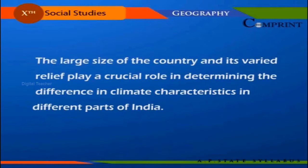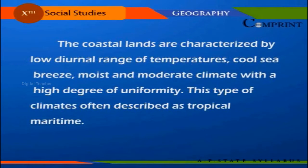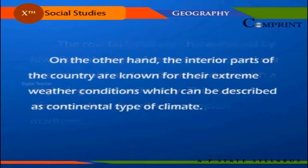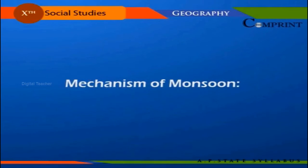The coastal lands are characterized by low diurnal range of temperatures, cool sea breeze, and a moist and moderate climate with a high degree of uniformity. This type of climate is often described as tropical maritime. On the other hand, the interior parts of the country are known for their extreme weather conditions, which can be described as continental type of climate.